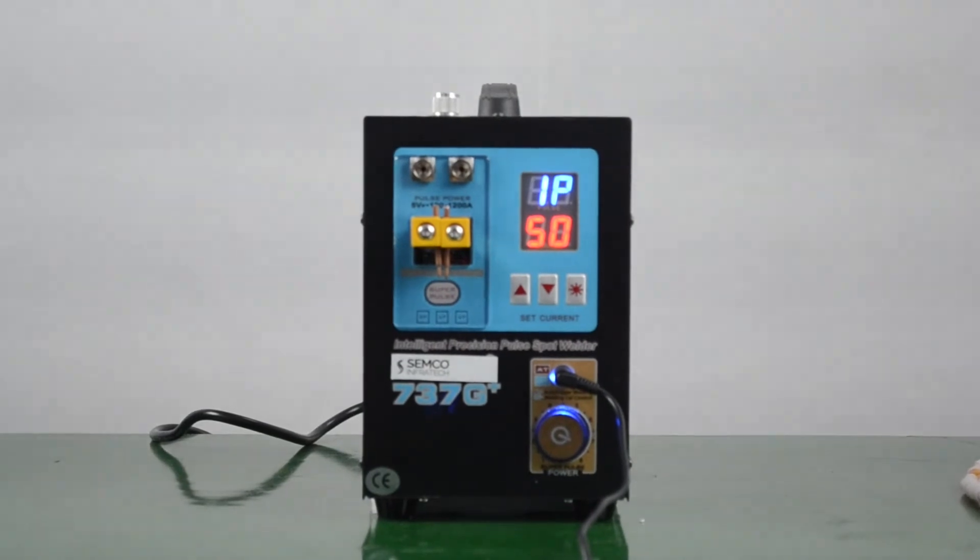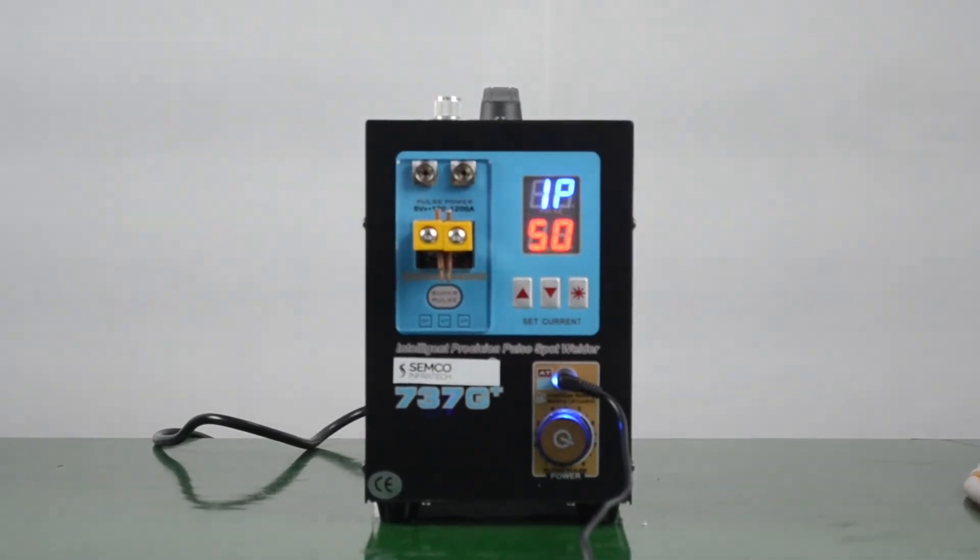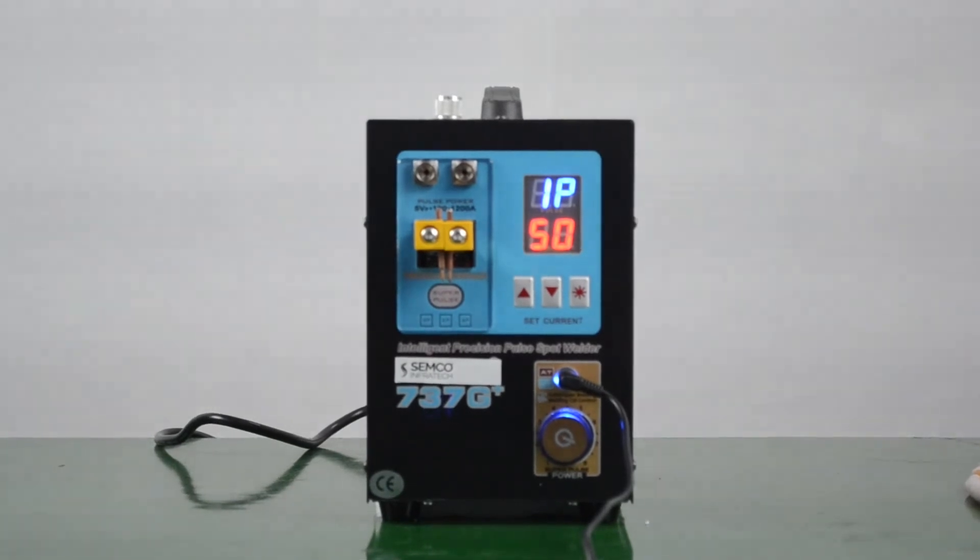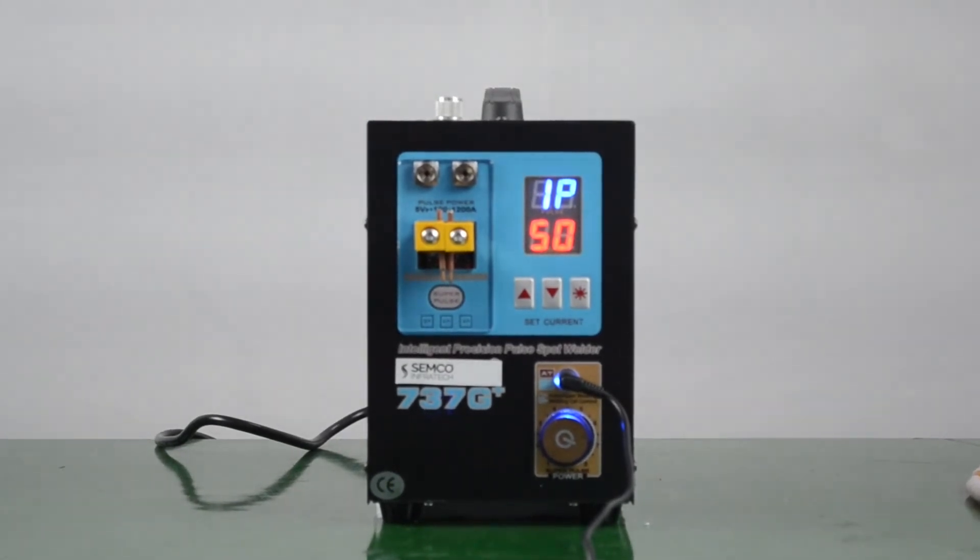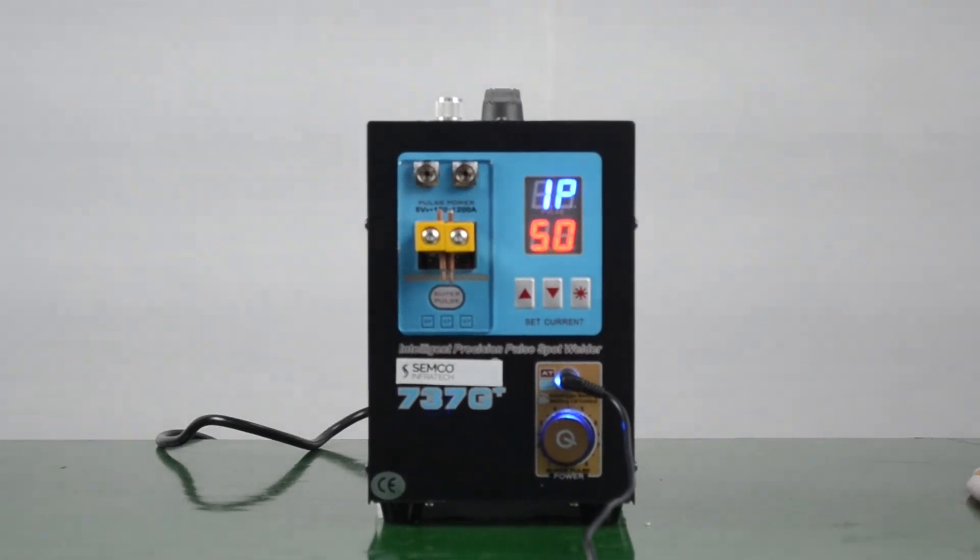This was all about the dual induction hand welding machine, model number 737G+. You can visit our head office for a live demo of this machine as well as our other machines at Samco InfraTech Private Limited. Thank you for watching our videos.